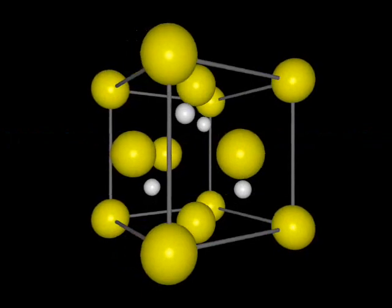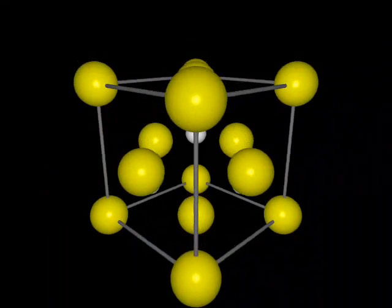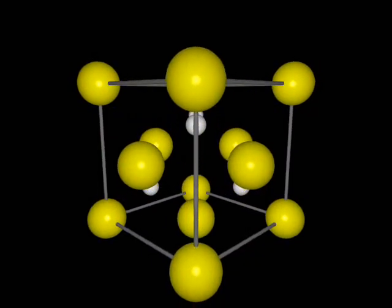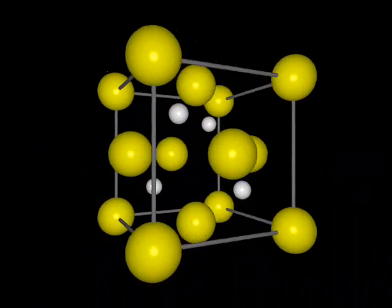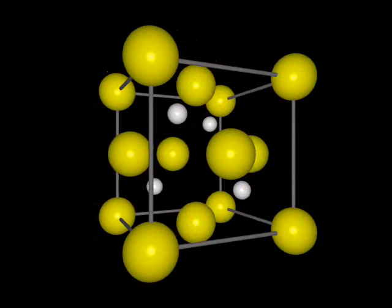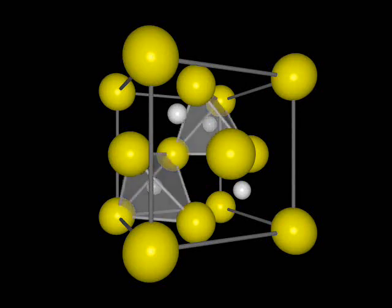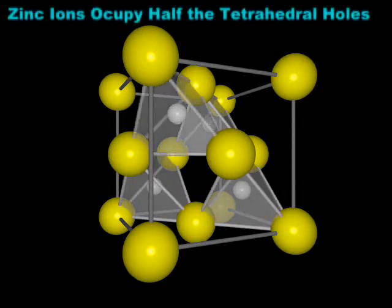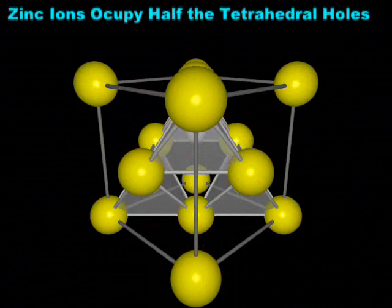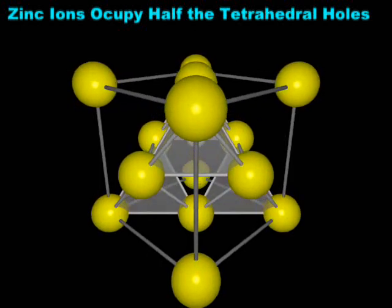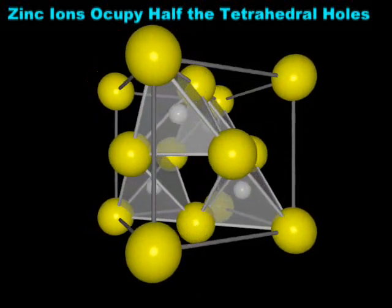A third ionic structure based upon a face-centered cubic lattice is the sphalerite structure. Sphalerite is the cubic form of the mineral zinc sulfide. In the sphalerite structure, the relatively large sulfide ions, represented here by the yellow spheres, form a face-centered cubic array. The zinc ions occupy the tetrahedral holes. Each zinc ion lies at the center of a tetrahedron of sulfide ions. However, since an array of N close-packed ions gives two N tetrahedral holes, and since there is one zinc ion for every sulfide ion, only half of the tetrahedral holes are filled.